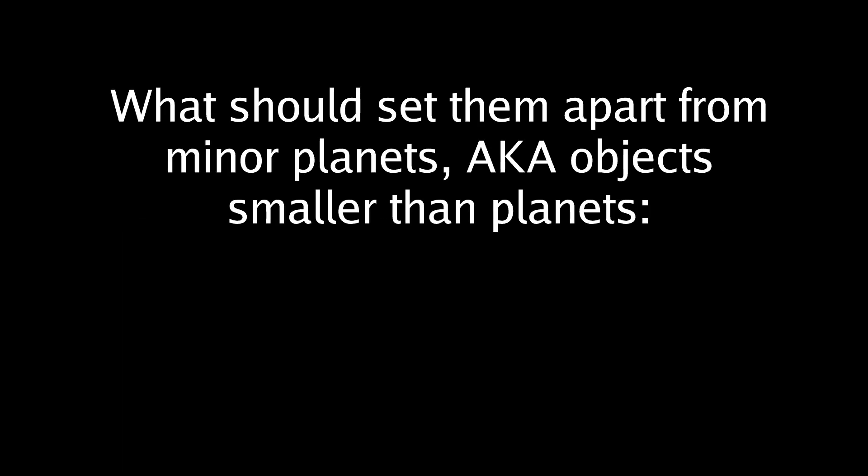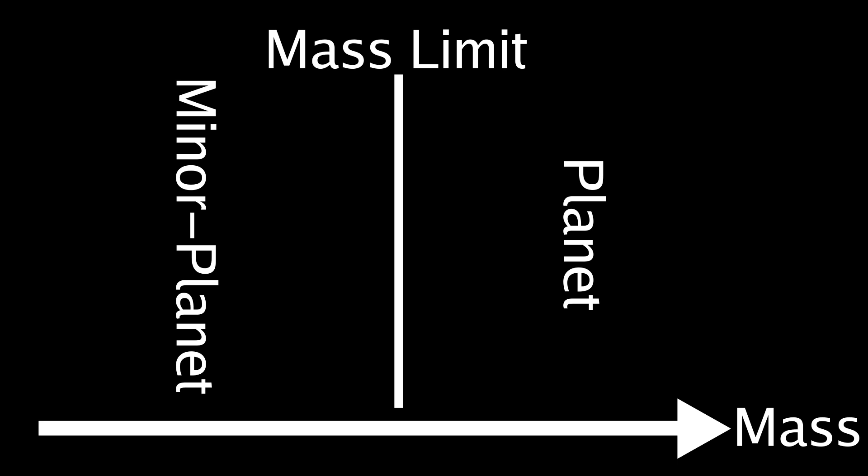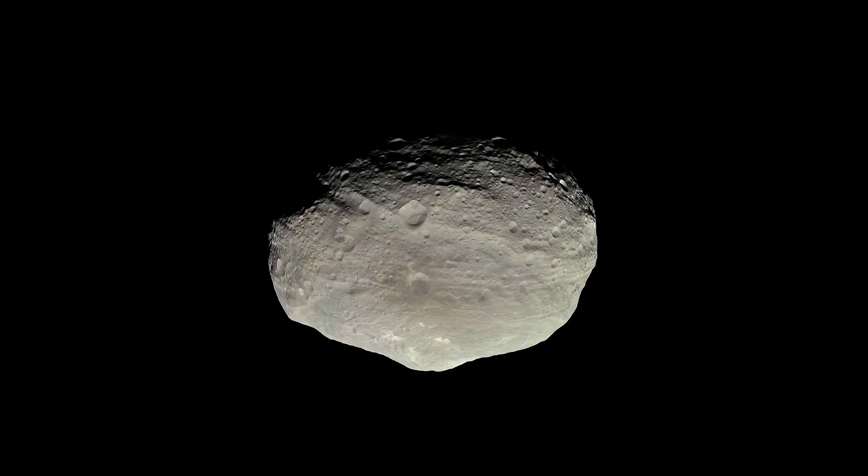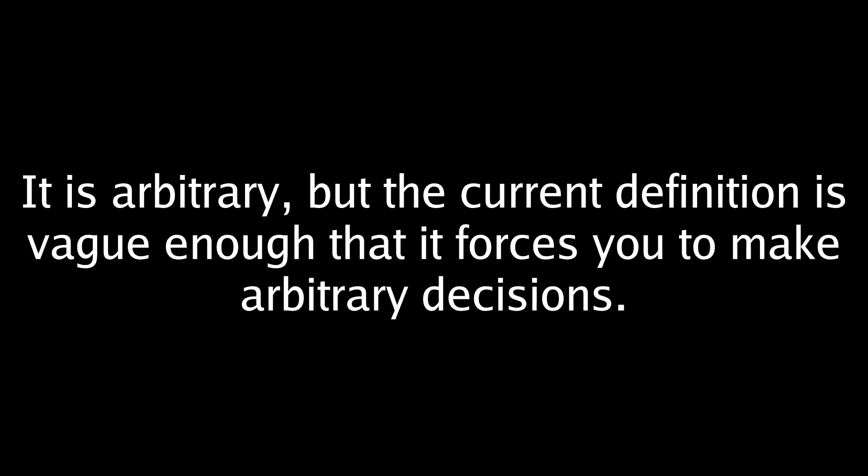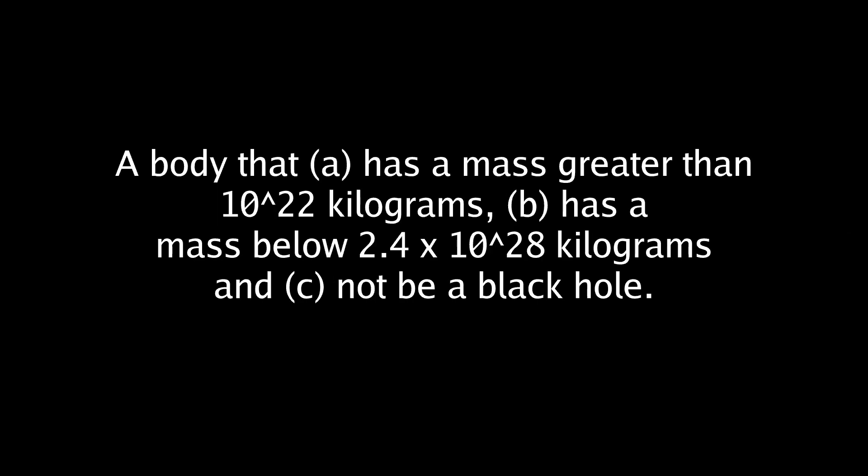What could replace it? What I think should set planets apart from minor planets is their mass. Above a certain mass, we should say the object is a planet, and below this mass, we should say that it is a minor planet. But where should we put the line? This mass should be greater than the mass of Vesta, as that is clearly not round. It is debatable if Iapetus is round, and Iapetus has a mass of 1.8 times 10^21 kilograms, so maybe something a bit more massive than that. How about 10^22 kilograms? I know it is arbitrary. However, the current definition of a planet is so vague that it forces you to make arbitrary decisions. So the definition of a planet I propose is: a body that A, has a mass greater than 10^22 kilograms, B, has a mass below 2.4 times 10^28 kilograms, and C, not be a black hole.